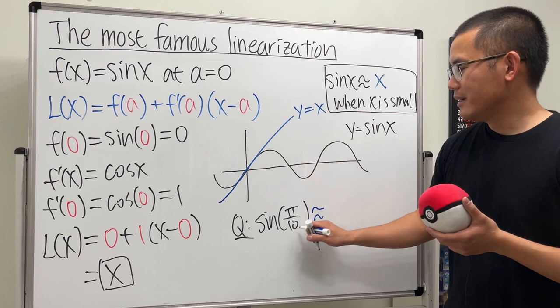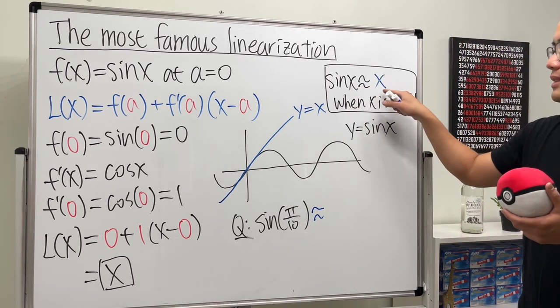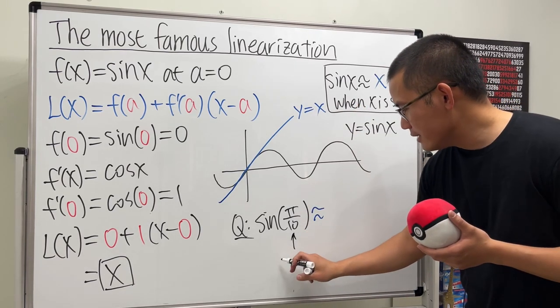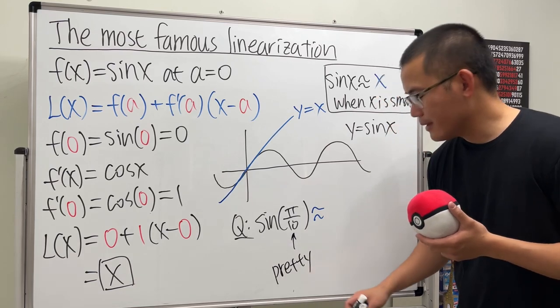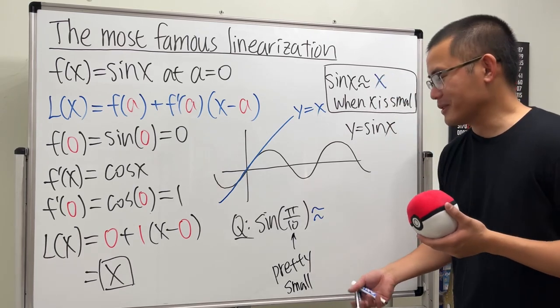So if you want to figure this out, what we can do is just say, hey, this is just going to be the input, because you see, sine x is equal to x, which is approximately equal to the input. And you see, this right here, you can just say it's pretty small. I will just write this down: it's pretty small. It's not only pretty but it's also small.